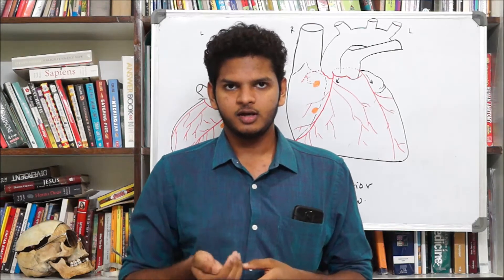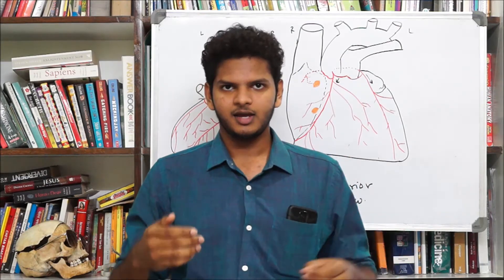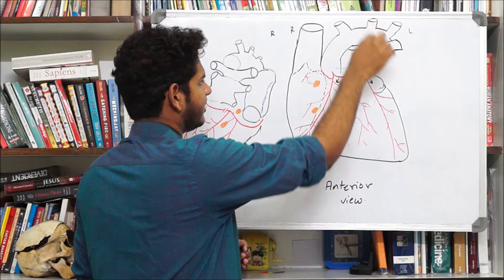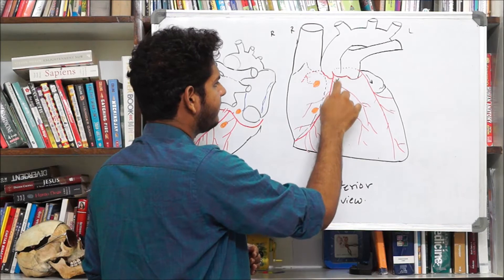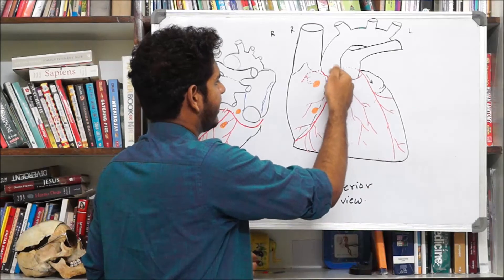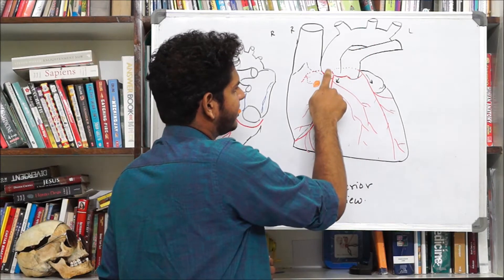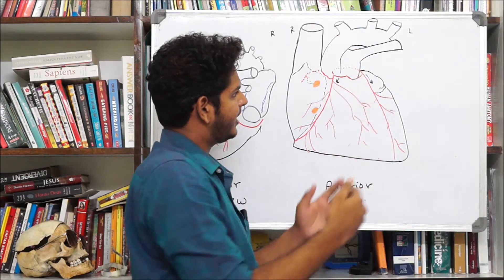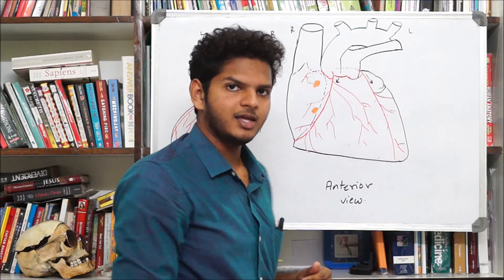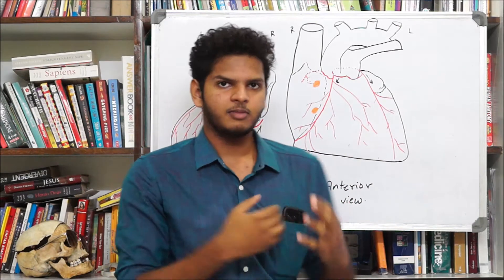The right coronary artery arises from the right anterior cusp of the ascending aorta. The left coronary artery, shown as dotted because it lies posterior to the labeled structures, arises from the posterior cusp of the aortic sinus.